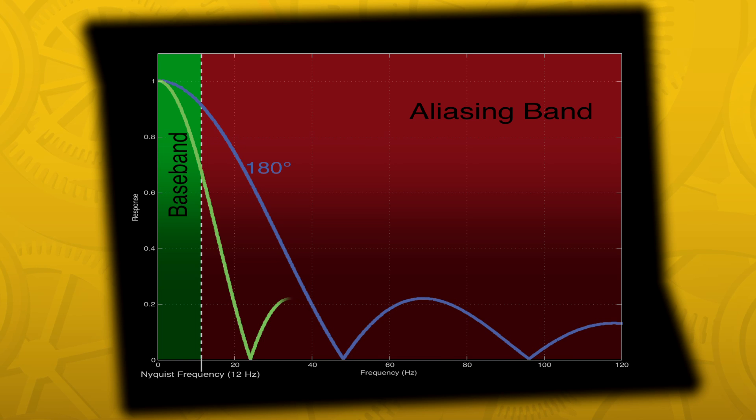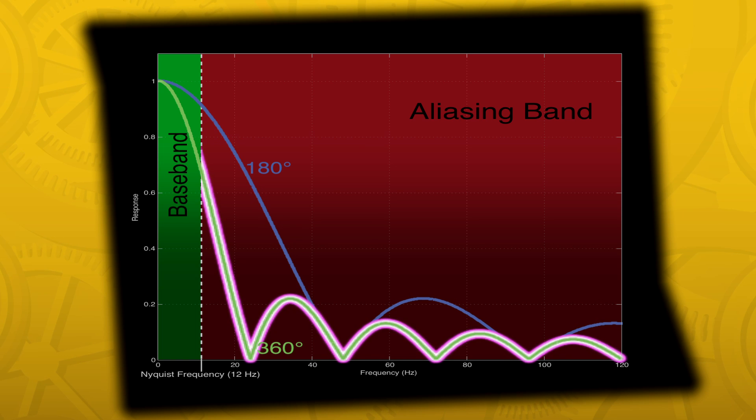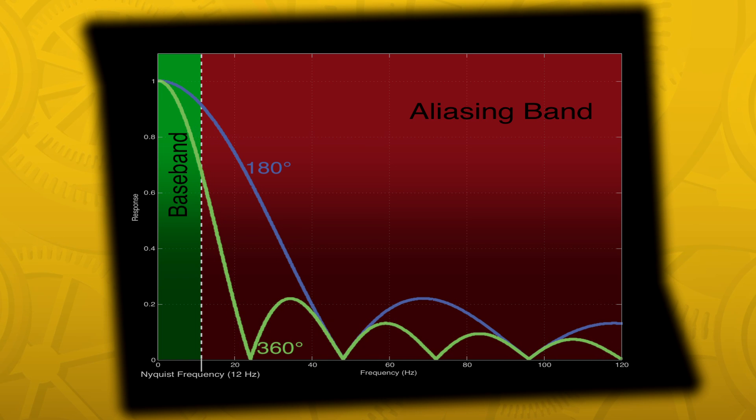The 360-degree shutter has less aliasing, but drops a lot in the baseband. That's why 360-degree shutters make the scene look smooth and dreamy. Things moving or changing quickly lose contrast.